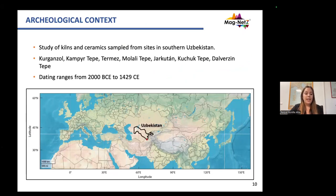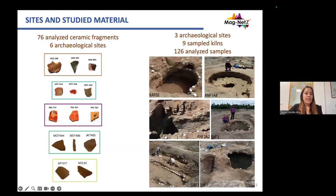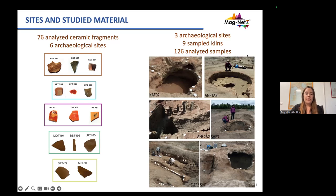To analyze the magnetic field in Central Asia, we studied different archaeological materials — kilns and ceramics — sampled from different archaeological sites located in the south of Pakistan. These samples were dated between 2000 BCE and 1429 BCE. We analyzed 76 ceramic fragments from six archaeological sites, and also 126 samples from 90 different kilns from three archaeological sites.